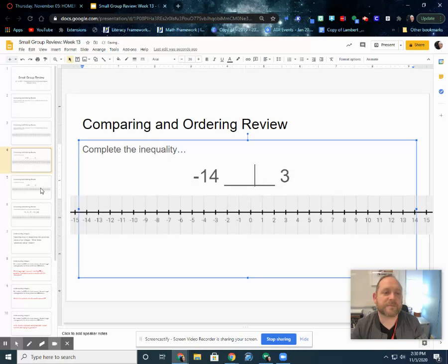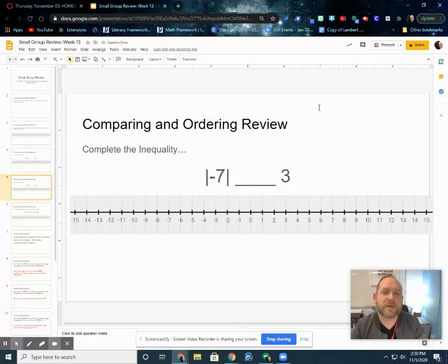All right, moving on. Comparing and ordering again, we've got the absolute value of -7, less than, greater than, or equal to 3. Now in this case, we can look at these again. Of course, -7 is on the left-hand side of our number line. -3 is on the right. So you would think that 3 would be larger again. However...